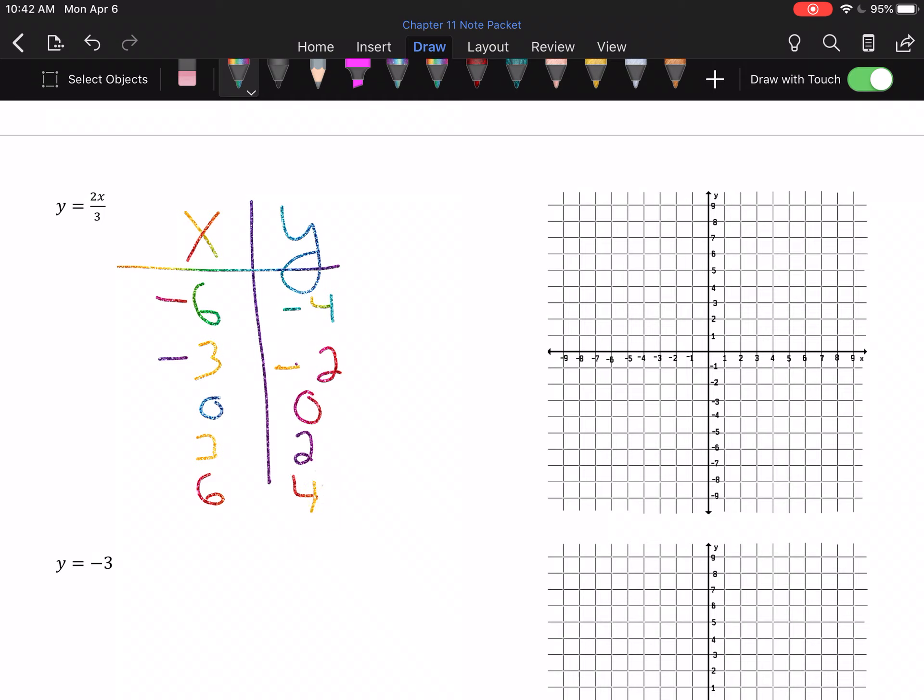We get our list of order pairs, and whether you're printing this out and plotting them properly, or you're popping over into Desmos, we would go left 6 down 4 for our first point, left 3 down 2, the origin, right 3 up 2, and right 6 up 4. And those, if we connect them, definitely look like they make a line to me. So, yes, this one's linear.